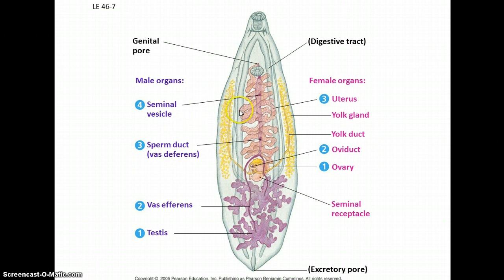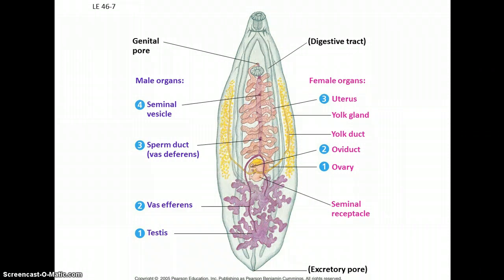The seminal vesicle is very common — it's a gland that produces compounds that become part of the semen. On the female side, you have the ovaries that produce the eggs, the oviduct that the eggs travel through. Sometimes there's a yolk duct, particularly if those eggs are endowed with a significant yolk, and then the uterus where fertilized eggs develop in internal fertilization.